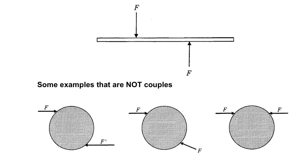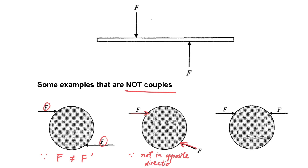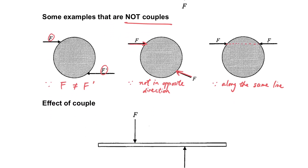Here we have some examples that are not couples. The first one: the forces are different in magnitude. The second one: the two forces have the same magnitude but are not in opposite directions. The third case: they are in opposite directions and of the same magnitude, but they act along the same line, so they are not couples.